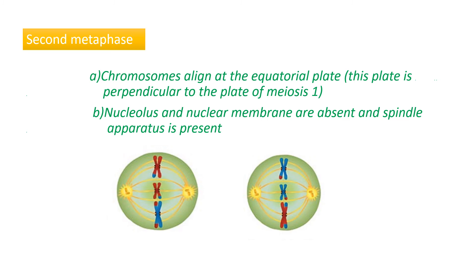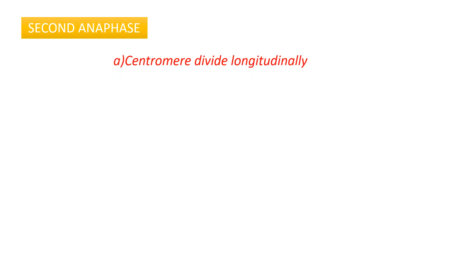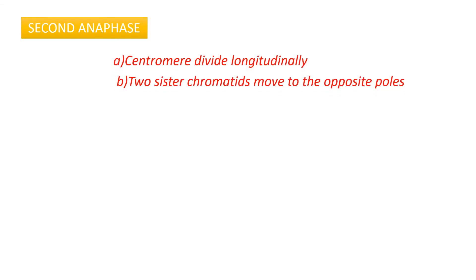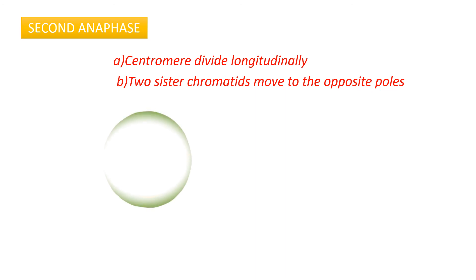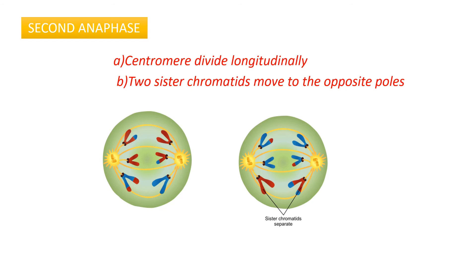During metaphase II, you can see the chromosomes aligned at the equatorial plate and the spindle apparatus. The third stage of meiosis II is anaphase II. During this stage, the centromere divides longitudinally and the sister chromatids move to opposite poles. You can see the sister chromatids moving to opposite poles in the two daughter cells.